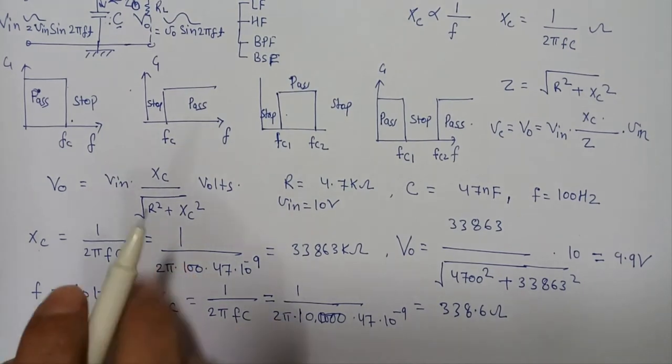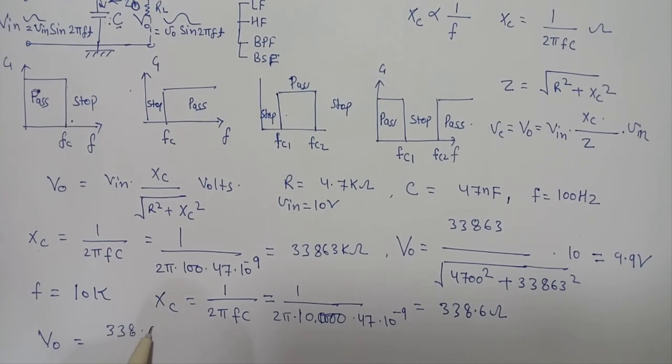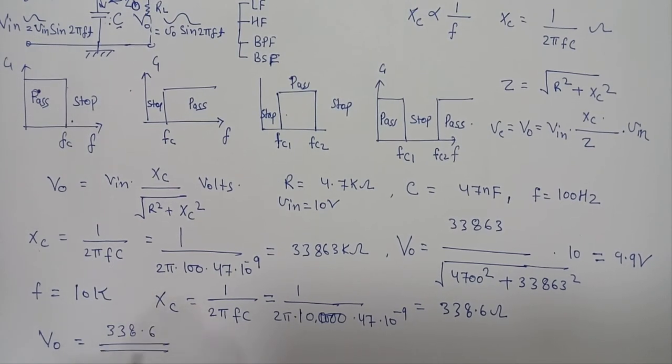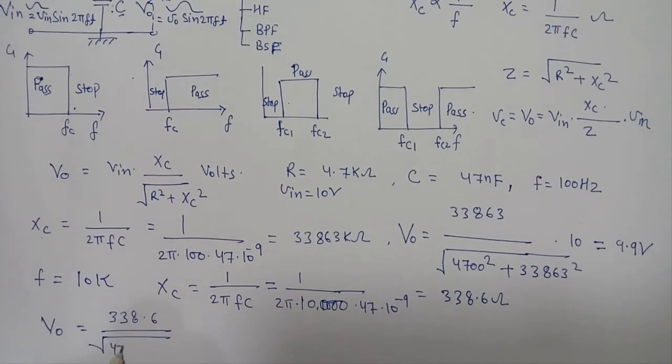Similarly, if we put this Xc value in our formula, the V naught will become 338.6 ohm / √(4700² + 338.6²) × 10.